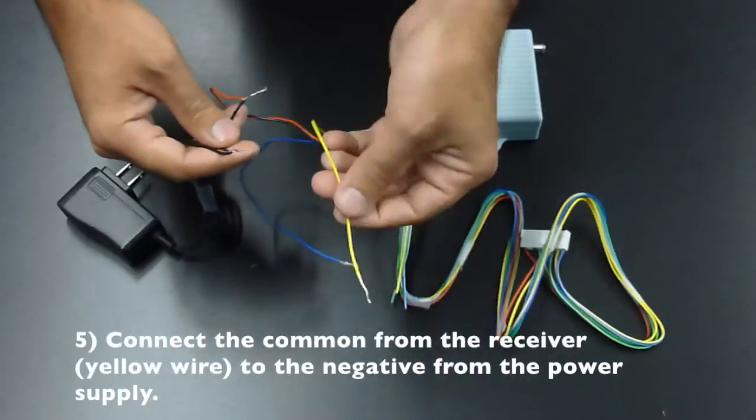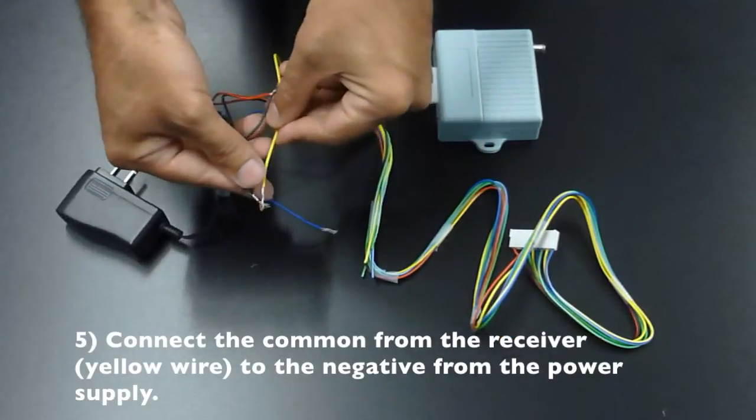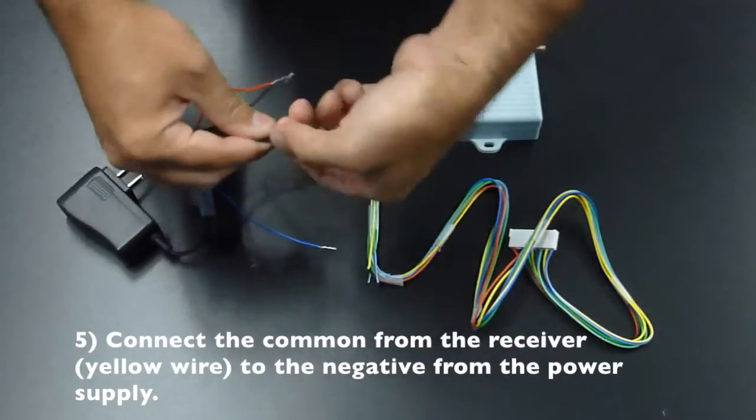Connect the common from the receiver, which is going to be your yellow wire, to the negative from the transformer.